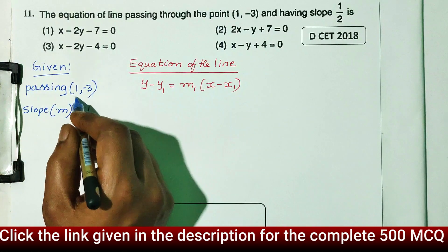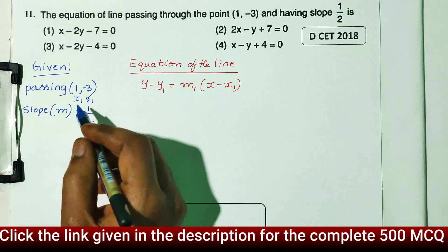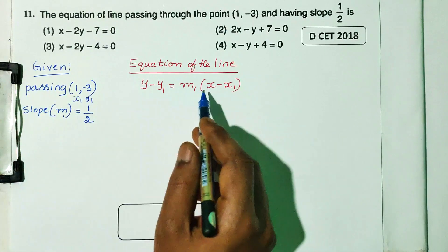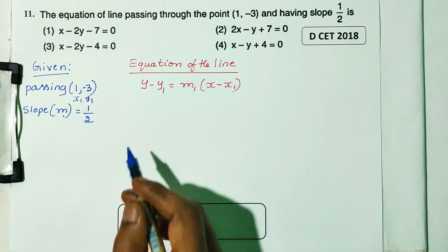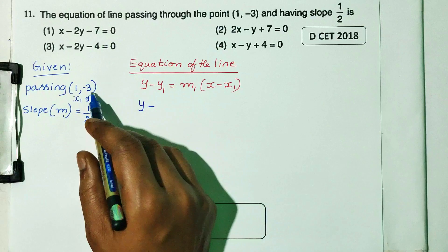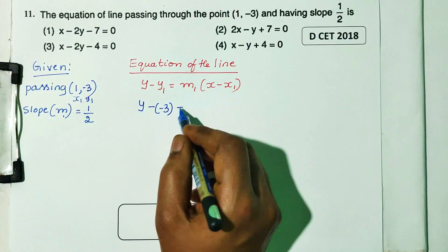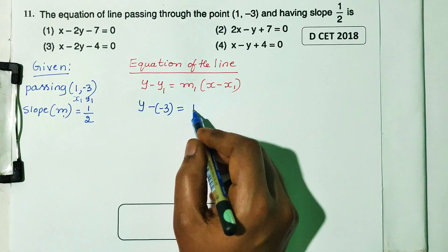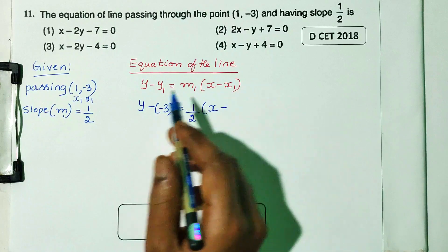The passing point gives us x1 and y1. We will substitute: y1 is equal to minus 3, and the slope m is equal to 1 by 2, into x minus x1.